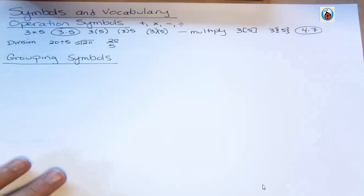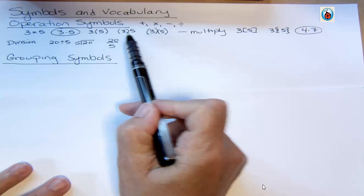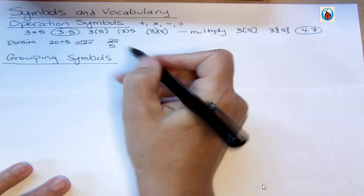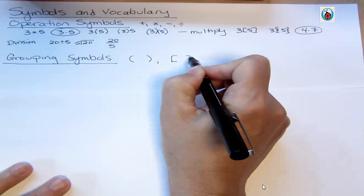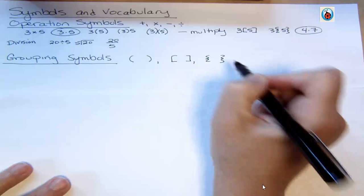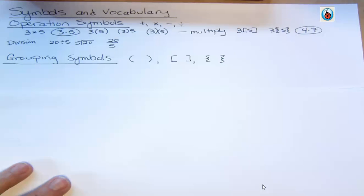Now when I talk about grouping symbols, what am I talking about? Well, we saw grouping symbols up here: parentheses, brackets, braces. Most of the time we use parentheses, I think because they're the easiest to draw.